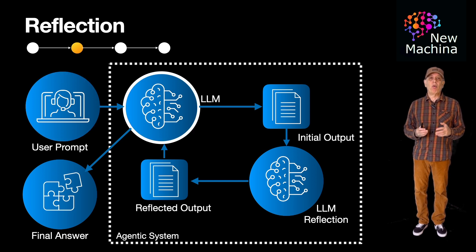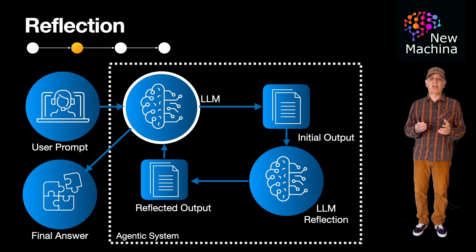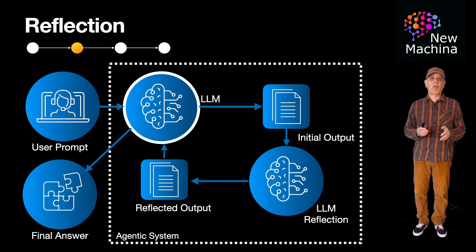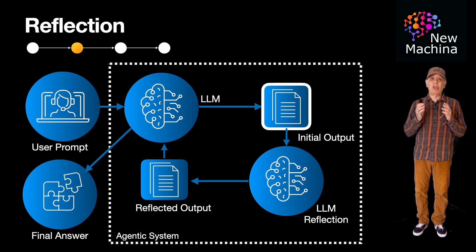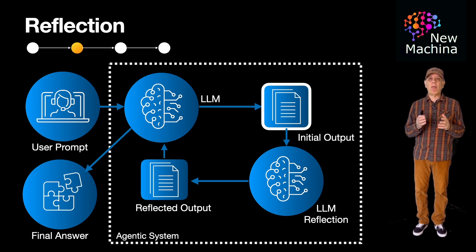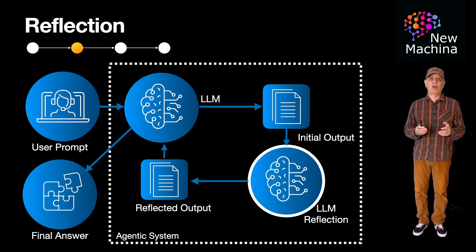Next, the LLM, which is part of this larger agentic system, receives the prompt. It takes the prompt from the user and generates an initial output, but instead of immediately responding to the user, it passes this initial draft output to the next phase, which is the reflection step.